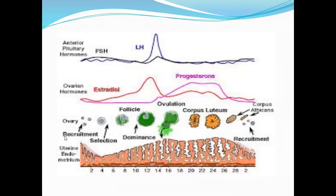In the ovaries there is a recruitment of possible oocytes, then a selection, and then the follicle will mature and become large. One of these will become the actual ovum, while the rest become polar bodies. As estrogen increases, follicle development proceeds. The FSH increases and then dips, increases a bit as estrogen levels rise, and right before ovulation FSH level has increased its production.